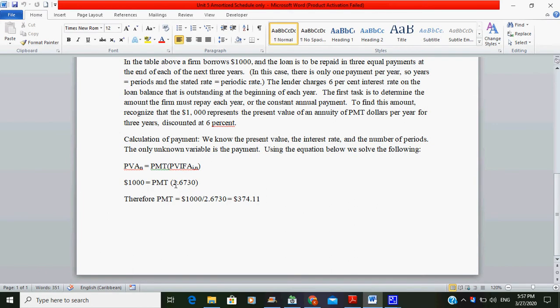Currently, the 2.673 is multiplying PMT. So you want PMT on one side. You're going to do the opposite of what is happening here. So you're going to divide this side by 2.673 and also this side by 2.673. When you have done that, you'll get 374.11, which will be your payment.